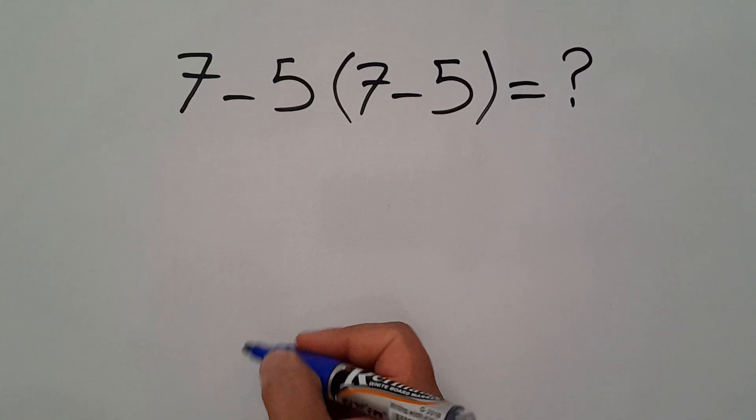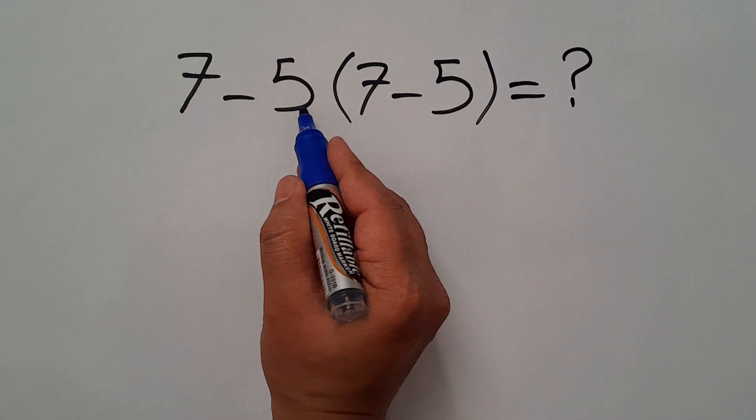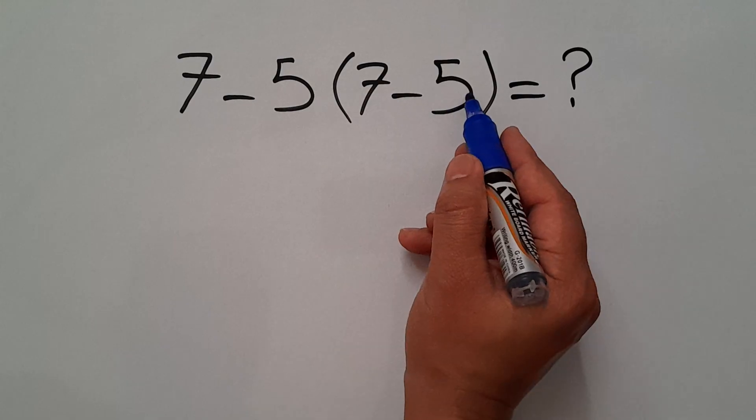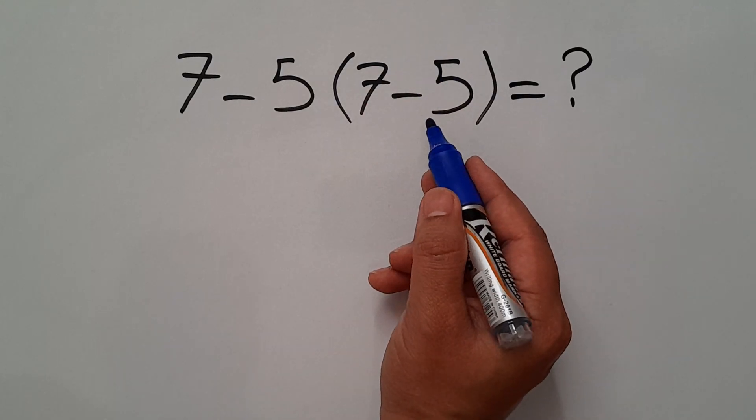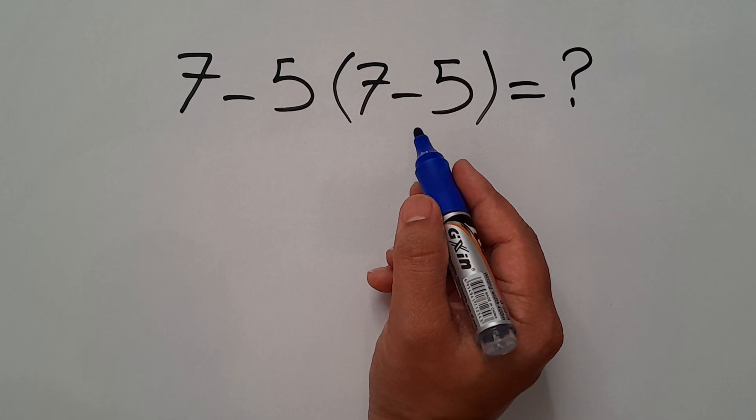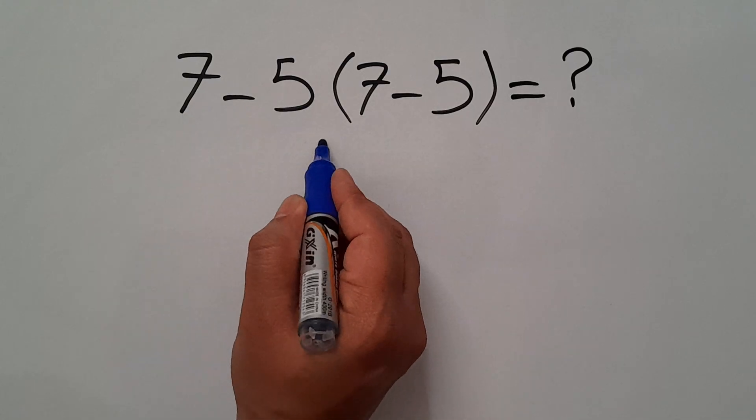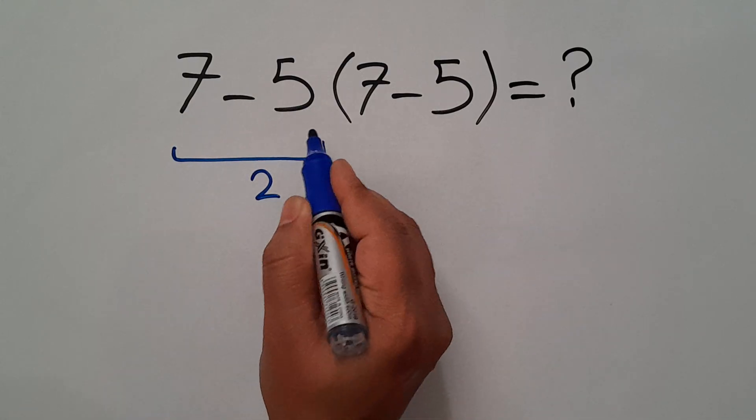Hey guys and welcome to this video. In this video we have 7 minus 5 times 7 minus 5 again. Are you ready to solve? Let's go ahead and get started. 7 minus 5 equals 2, so 2 times...